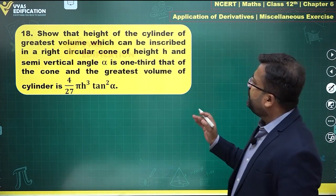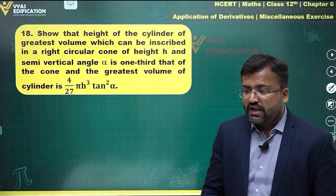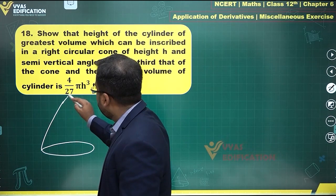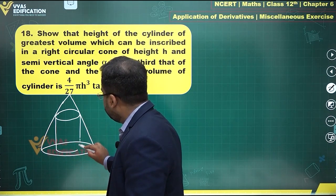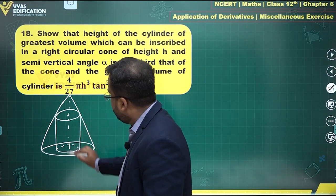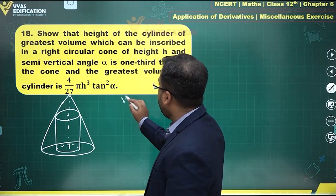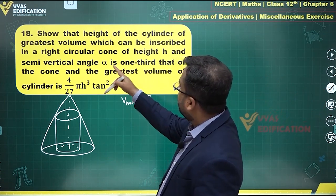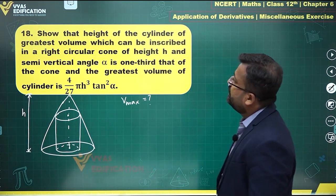Question 18 says: show that the height of the cylinder of greatest volume which can be inscribed in a right circular cone of height h. We have a right circular cone, and inside that you have a cylinder. The volume of the cylinder has to be maximized. The height of the right circular cone is given to be small h, and the semi-vertical angle is alpha.